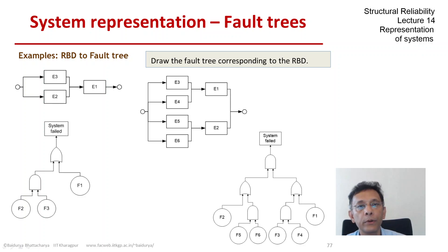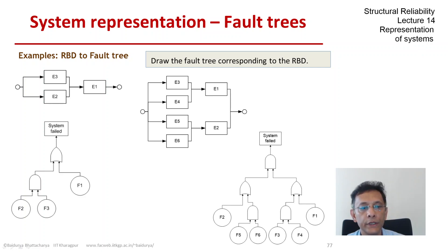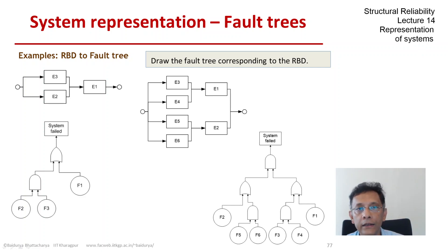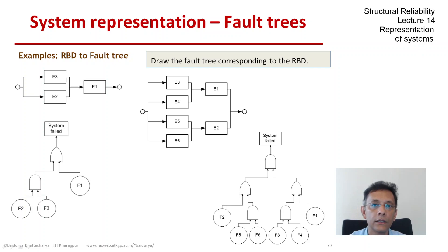That is the upper arm of the full system. On the left you see the subsystem created by F2, F5, and F6 — elements 2, 5, and 6 — and they have an identical structure. Together, these two subsystems go through an AND gate because they are arranged in parallel, meaning both arms have to fail in order for the system to fail. So that feeds into the top event of system failure.